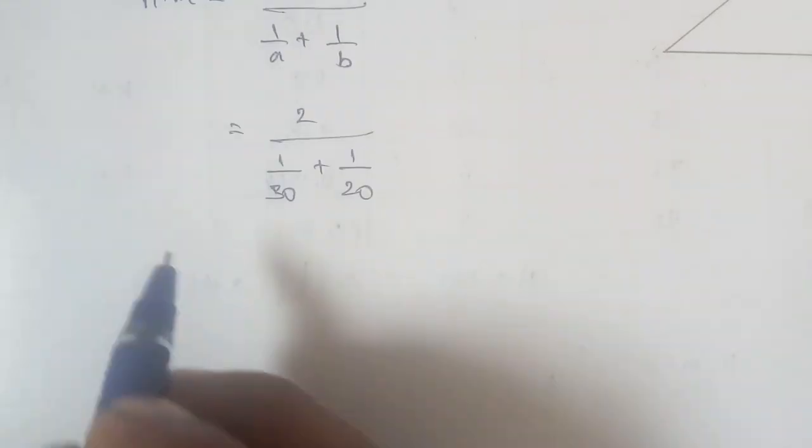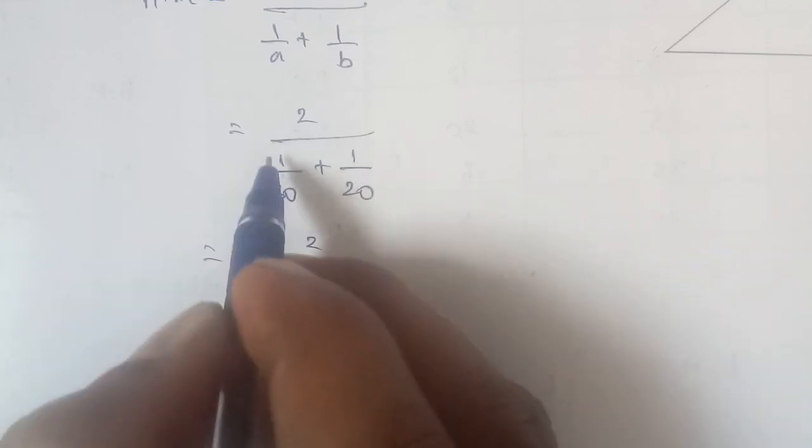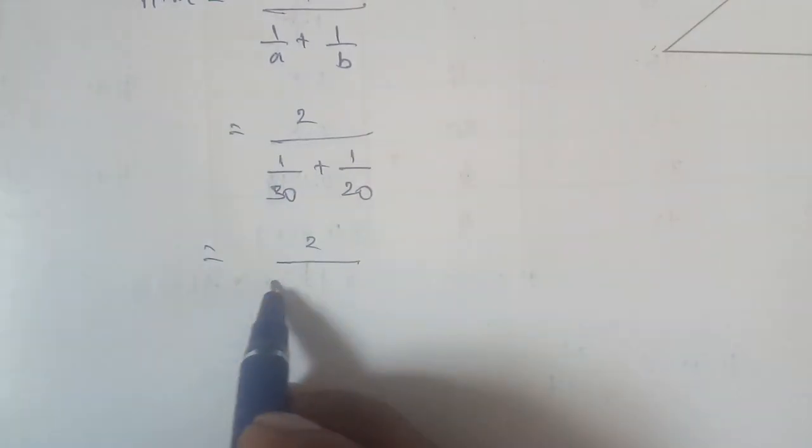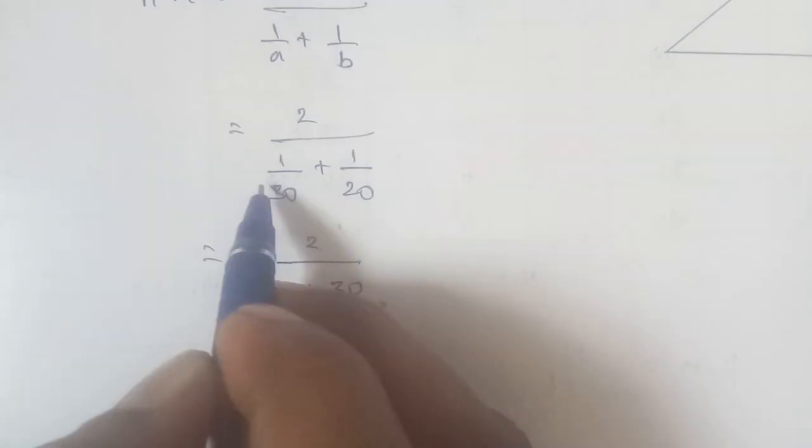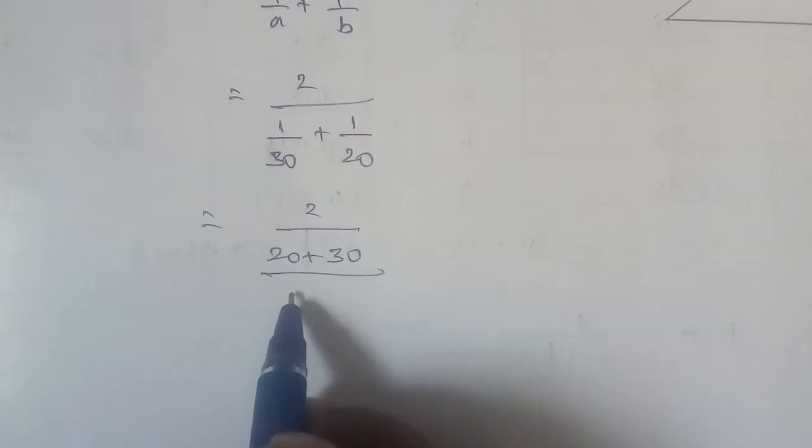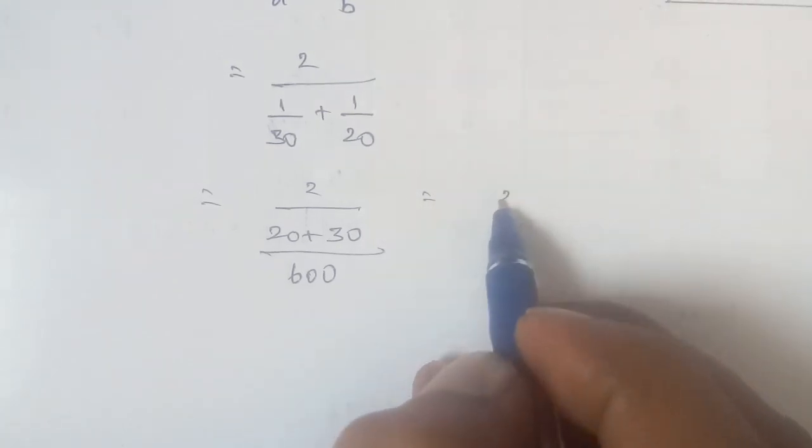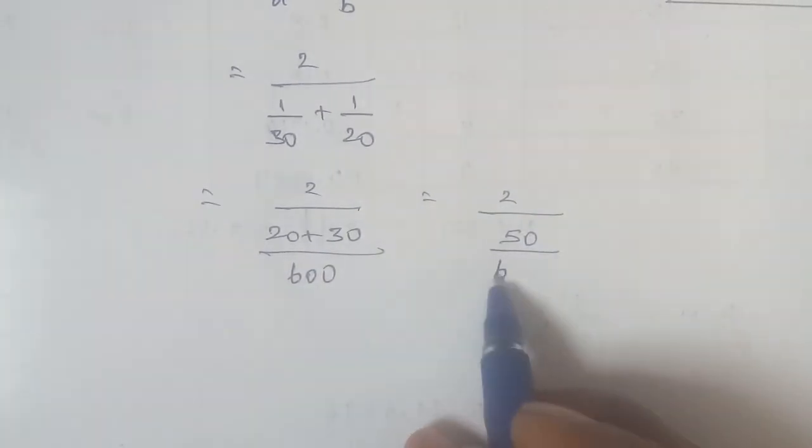Using cross multiplication: 1 into 20 is 20, plus 1 into 30 is 30. In the denominator we have 20 plus 30 which is 50. In the numerator, 30 times 20 is 600, times 2 gives 600.